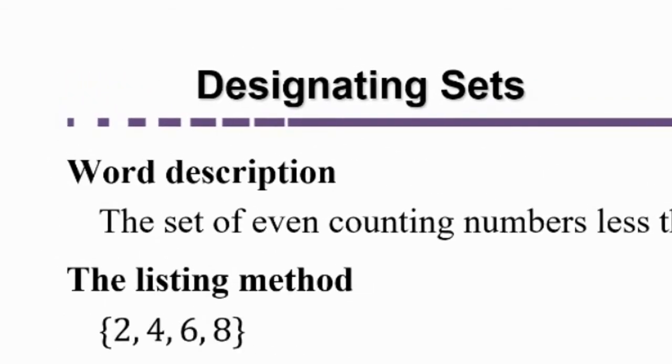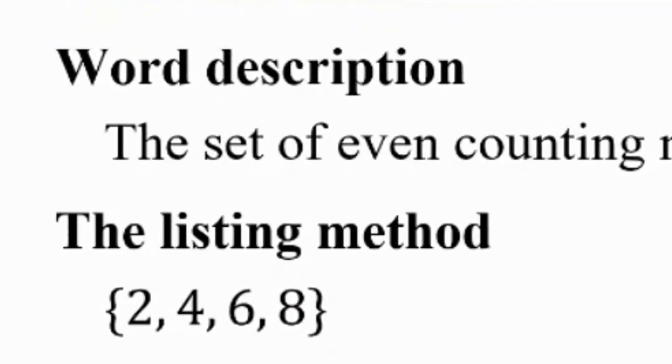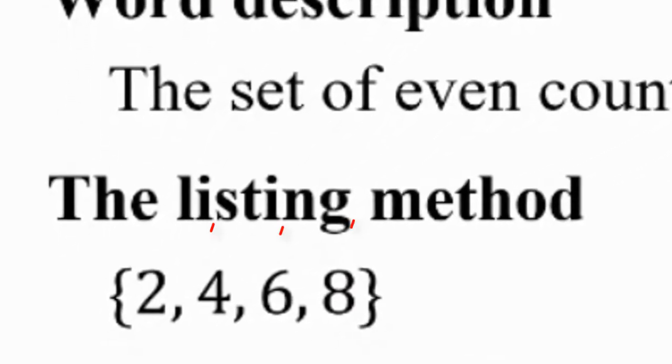When we say the listing method, there is a specific notation that we expect you to use. You're going to use these curly brackets and then you're going to list each of the elements that are in the set with a comma in between.